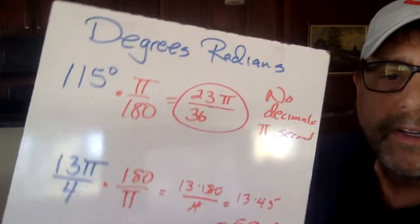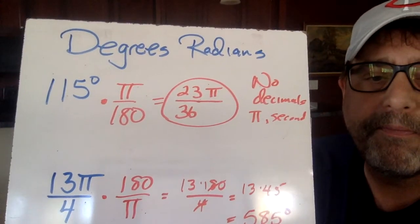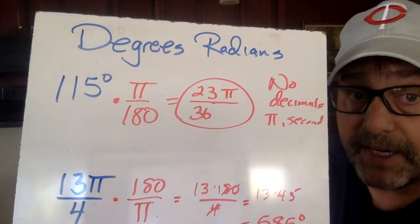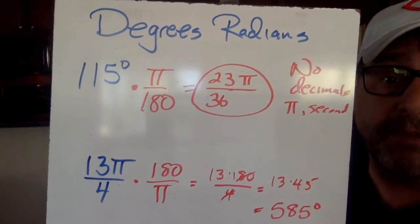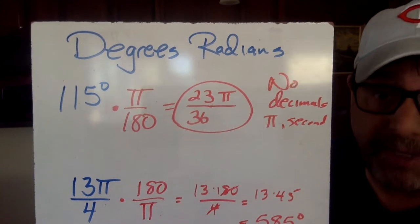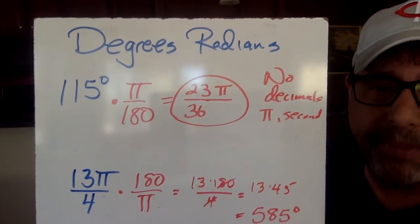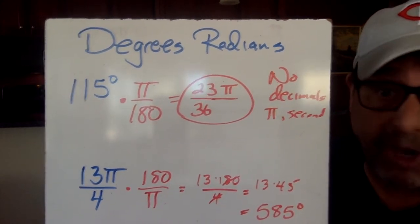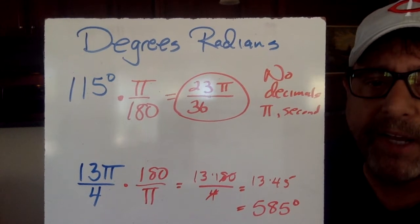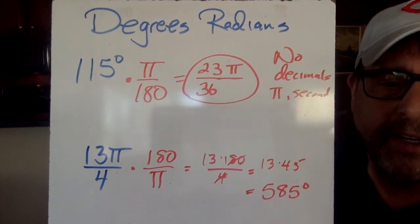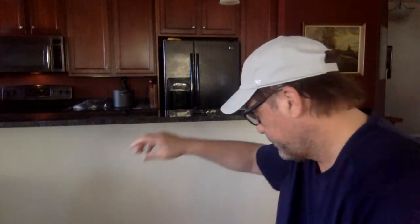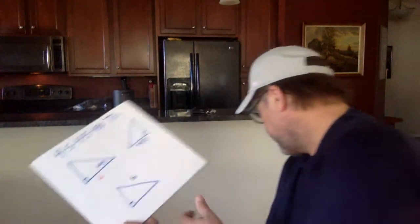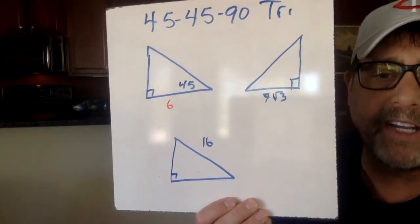Here are the objectives. Degrees to radians: we take 115 degrees and multiply by pi over 180. You have to simplify the fractions just like in elementary school. Five goes into 115, five goes into 180, and it becomes 23 pi over 36. Do not give decimal answers — that's wrong. You put the pi second. Some of you may have gone to an online help thing, which is awesome, but it said like pi 23 — don't do that. No decimals, pi second. And for the bottom one, changing 13 pi over 4 into degrees: the pi's cancel out, then we reduce and 4 goes into 180, 45 times, and we get 585 degrees. So there is one of your objectives right there.